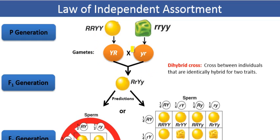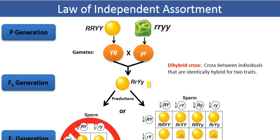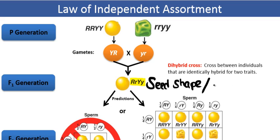When we mate the parental generation — when we cross those two pure-breeding lines — we get an F1 generation, a first filial generation, that are dihybrid. By dihybrid we mean they are heterozygous for two characters being followed in the cross: seed shape and seed color. These are the two characters we are following in this dihybrid cross.